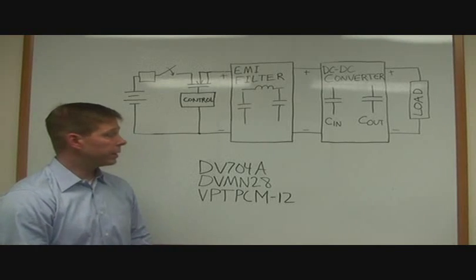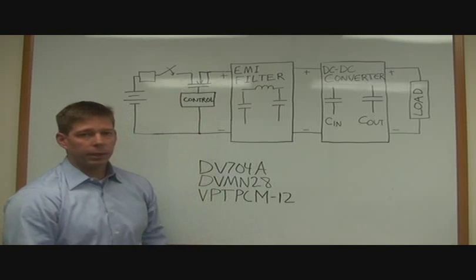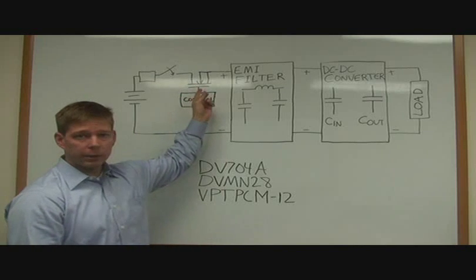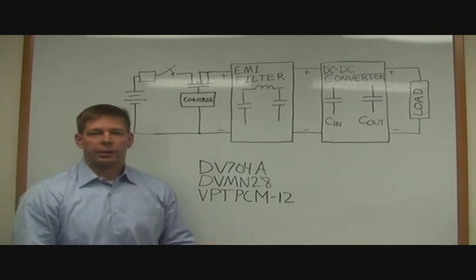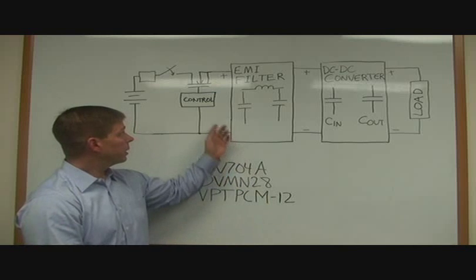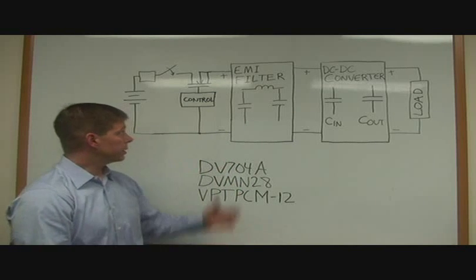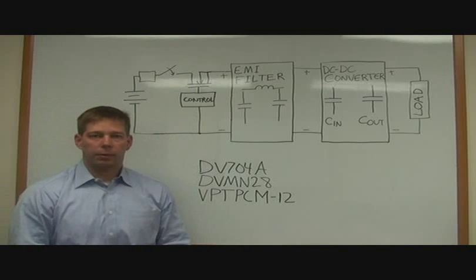The customer can also easily implement inrush current limiting with a series switch in line with the input. The switch can be either in the positive leg or in the ground leg. Basically, the control circuit acts to slow down the voltage rise time to the input of the EMI filter and the DC-to-DC converter. This is basically what's implemented in these three products to limit inrush current.